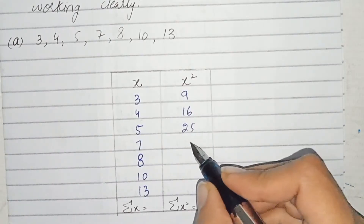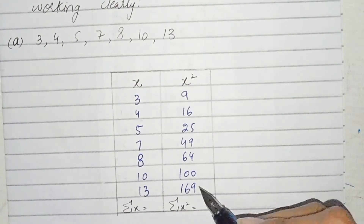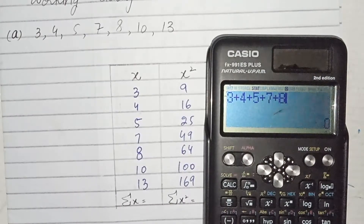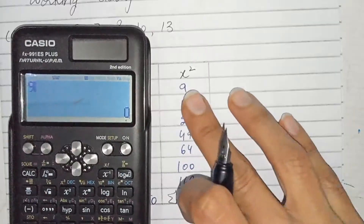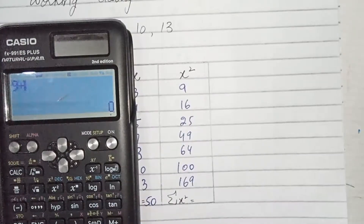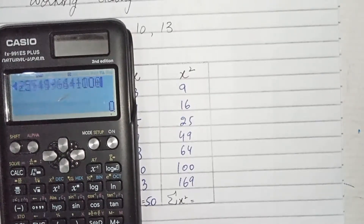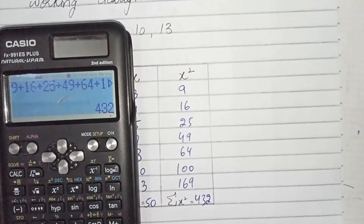Now we add the x values: 3 + 4 + 5 + 7 + 8 + 10 + 13 = 50. Then we add the x squared values: 9 + 16 + 25 + 49 + 64 + 100 + 169 = 432.